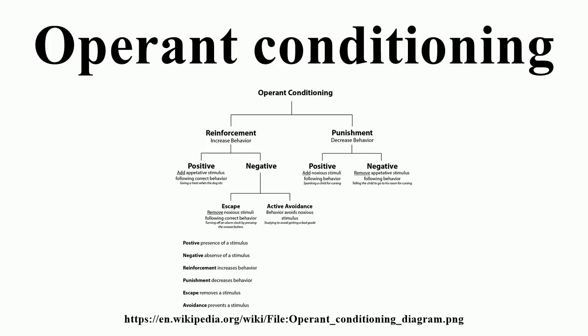To implement his empirical approach, Skinner invented the Operant Conditioning Chamber, or Skinner Box, in which subjects such as pigeons and rats were isolated and could be exposed to carefully controlled stimuli. Unlike Thorndike's Puzzle Box, this arrangement allowed the subject to make one or two simple, repeatable responses, and the rate of such responses became Skinner's primary behavioral measure.